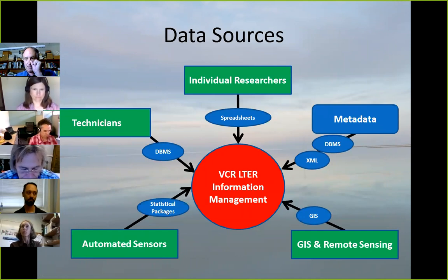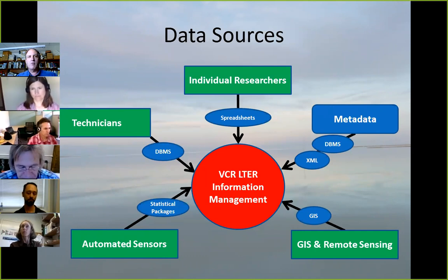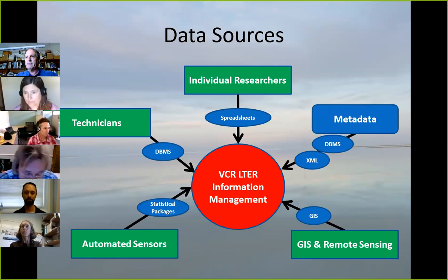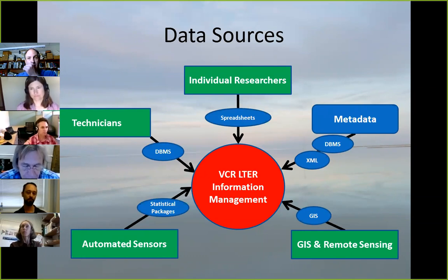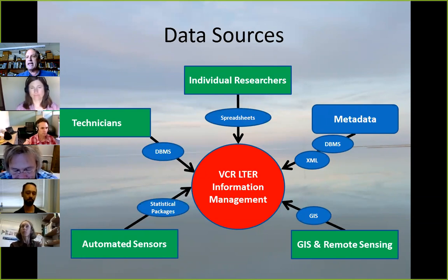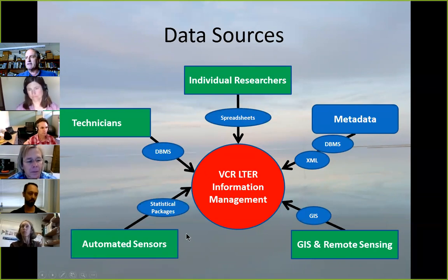Where do we get our data from? It depends. The form we get data in depends a lot on who we're getting it from. For individual researchers, spreadsheets are the main way we get data. However, for many of our technicians collecting long-term data sets, we will set them up with a database management system — typically an Access set of forms for adding data. We'll talk more about automated sensors in a minute.